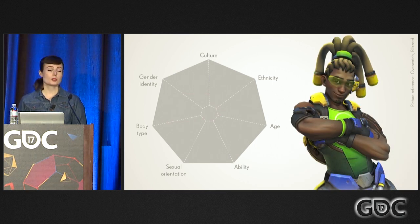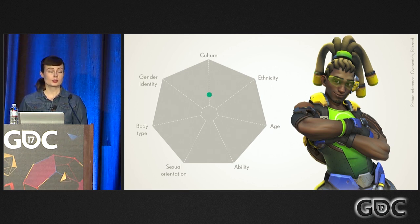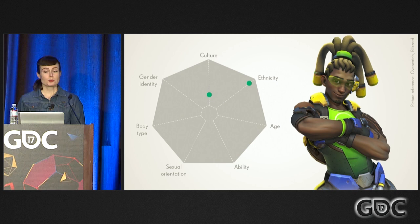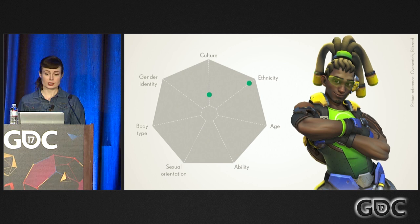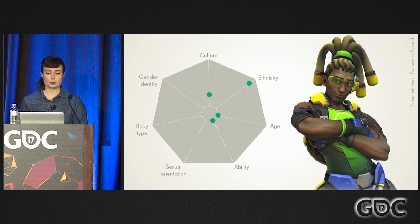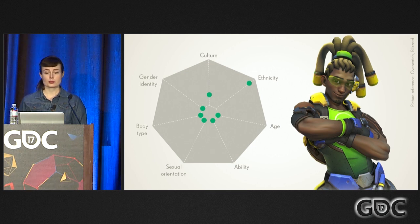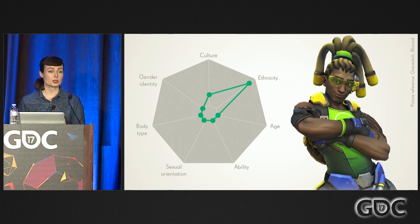This is Lucio. Culture: he is a DJ living in Brazil, so he is a little bit out from the norm. Ethnicity: he is black, so we put this quite far out — it's not that common. Caucasian people are most common, and Asians are more common than, say, Indians. Age: he's 26, so that doesn't stand out. Ability: non-disabled, on the norm. Sexual orientation: we don't know anything about that, so he stays on the norm. Body type: he is athletic, and that's expected of men. Gender: he is a man, which is most common. Looking at the diversity space, he has a sharp point toward ethnicity and a small stretch in culture, but doesn't stand out much in other ways.